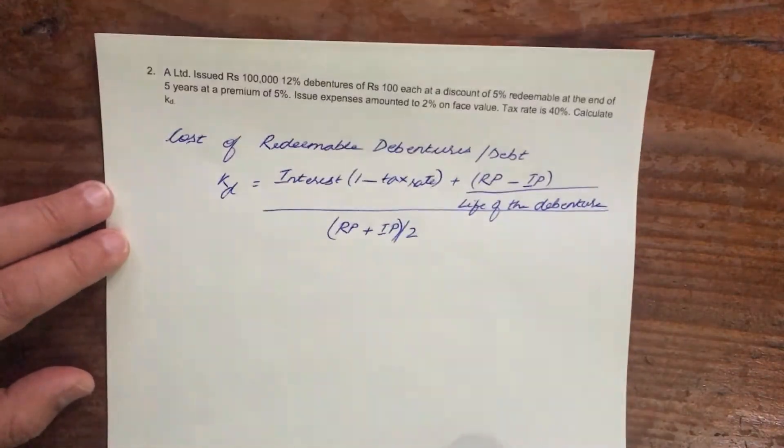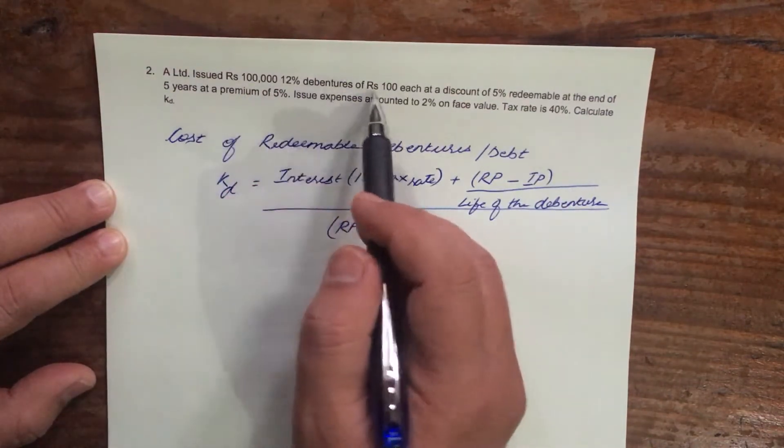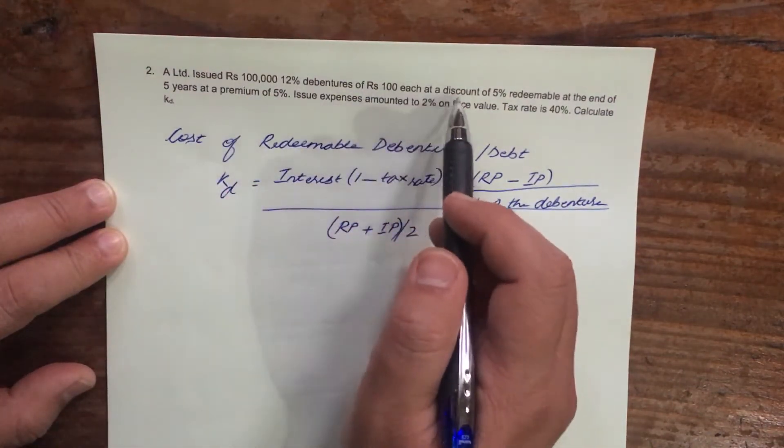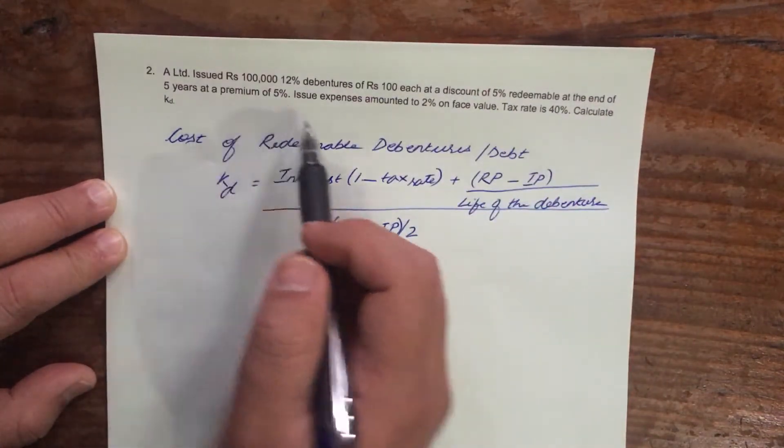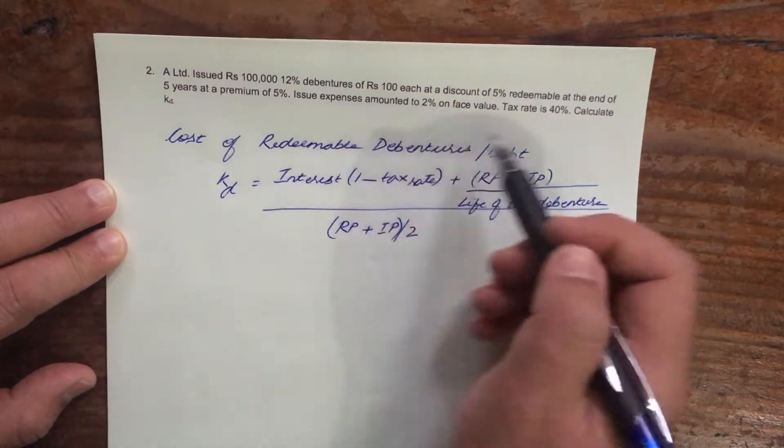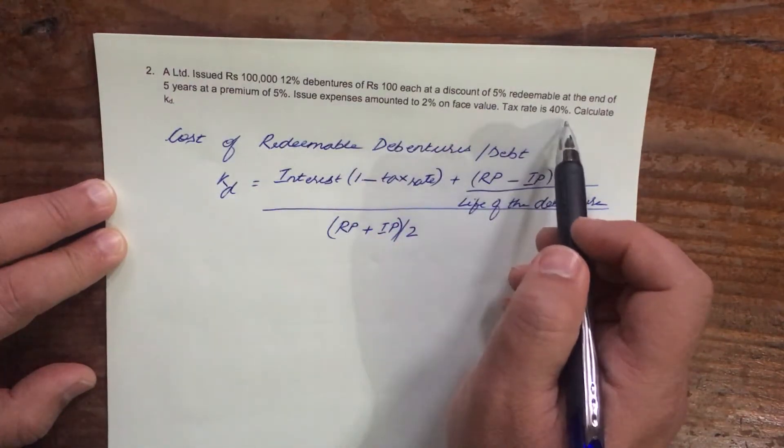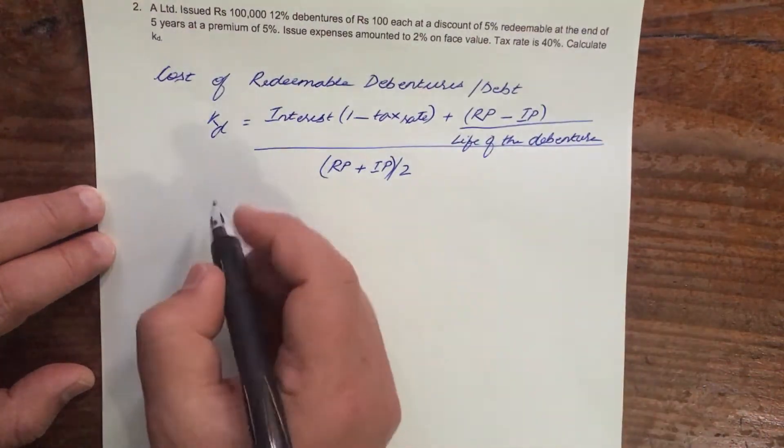Now let us look at this problem. A limited issued Rs 1,12,000 debentures of Rs 100 each at a discount of 5%, redeemable at the end of 5 years at a premium of 5%. Issue expenses amounted to 2% on face value. Tax rate is 40%. Calculate KD. So you have to calculate the cost of debt.